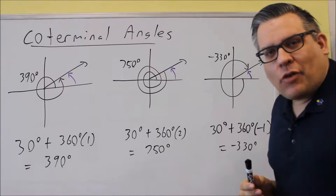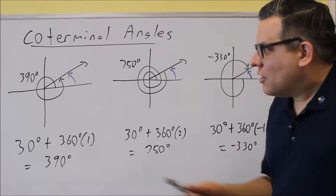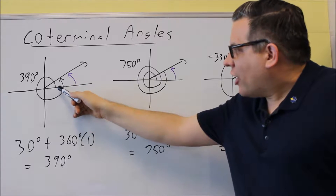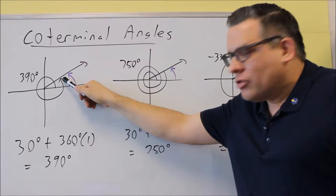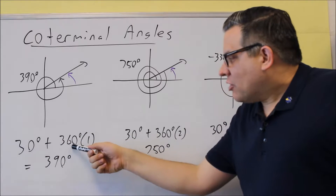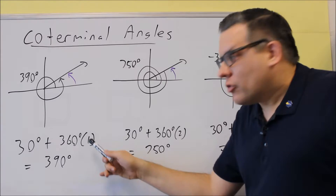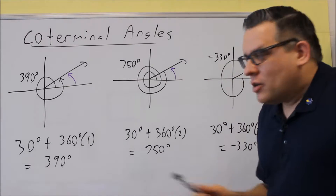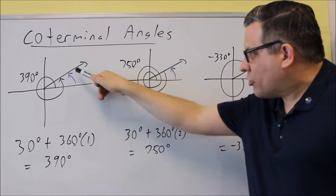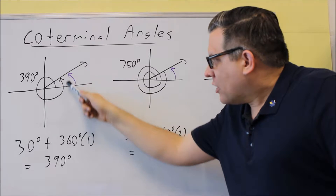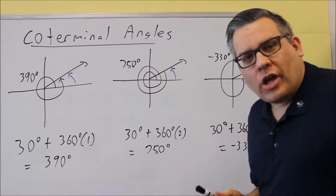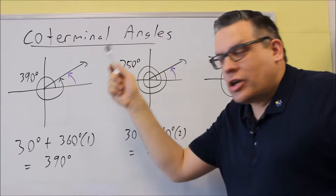Let's run through these different examples so you can get the idea of coterminal angles. The purple angle here is a 30-degree angle. If I go around once first and then go up to the 30-degree angle, that would be 390 degrees. It's 30 degrees plus one revolution — that's what the one in parentheses means: how many multiples of 360 we go around. So 390 and 30 degrees are coterminal angles because they end up at the same line.